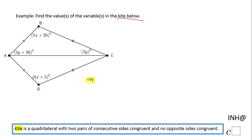First of all, you notice in the picture that we have these two sides congruent and these two sides congruent, but opposite sides are not congruent. So that's the reason we have a kite.